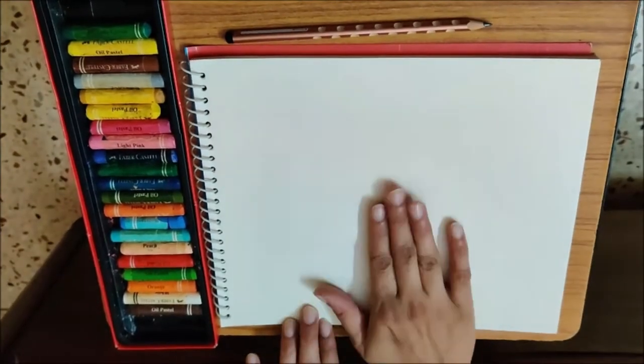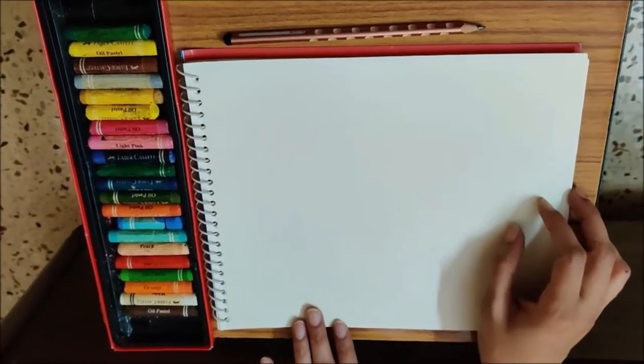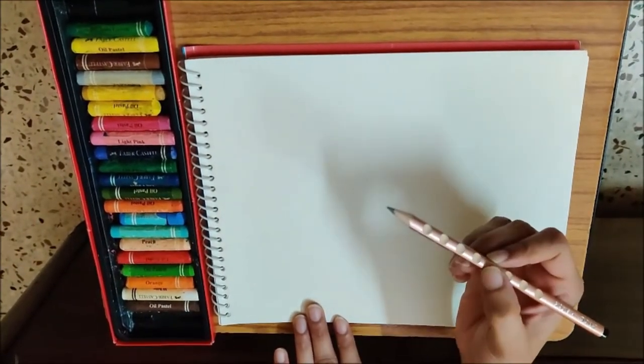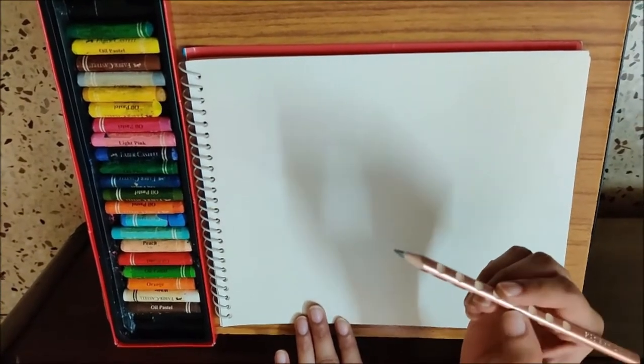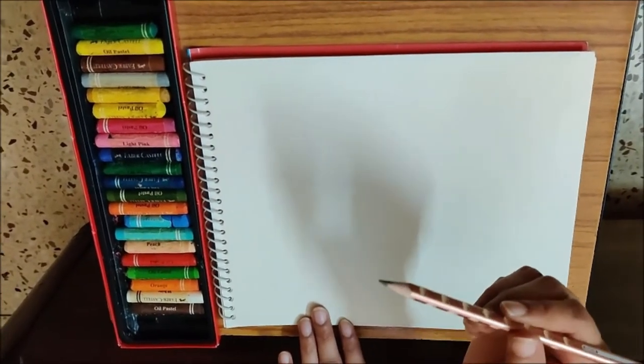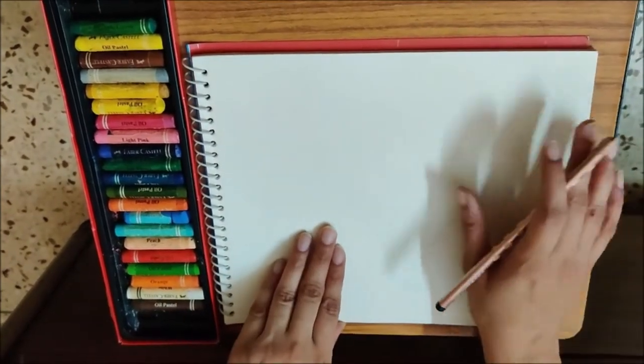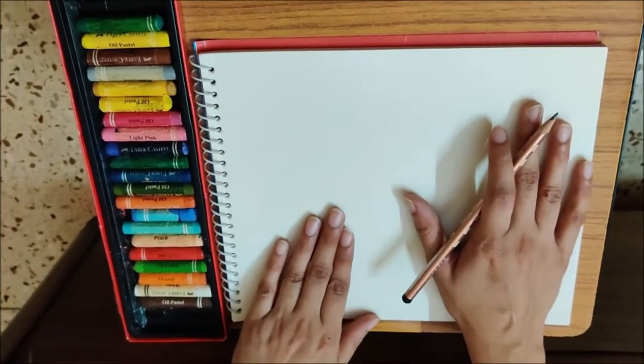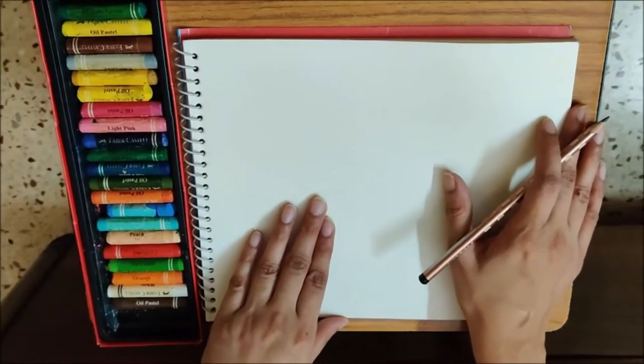So children, this is the very first page of your drawing file. For this activity, you need a sharpened pencil. For every activity which you have to do with the pencil, you need a sharpened pencil. Now, I am going to write my name on this drawing file because this is my drawing file. You will write your name on your drawing file.